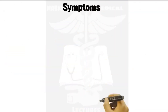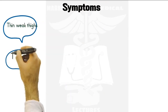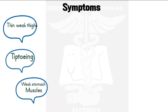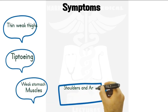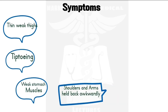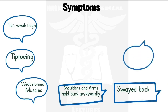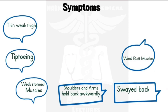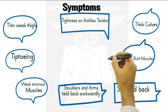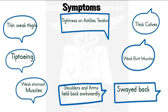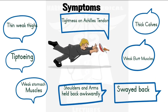Some symptoms associated with Duchenne muscular dystrophy: it's typically muscle degeneration. We can see thin weak thighs, tiptoeing, and weak stomach muscles which protrude the stomach out. We see shoulders and arms held back awkwardly due to weakness in that area. We have a swayed back to compensate, weak buttock muscles pushing the belly out further, and thick calves — however not muscular calves, as they mostly consist of fat, so they're pseudo-hypertrophy. There is also tightness in the Achilles tendon and weak front leg muscles contributing to the tiptoeing. DMD sufferers have poor balance, are usually clumsy, often fall over as children, and show an awkward walking pattern.